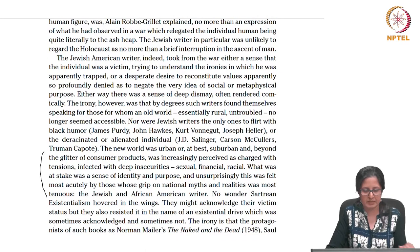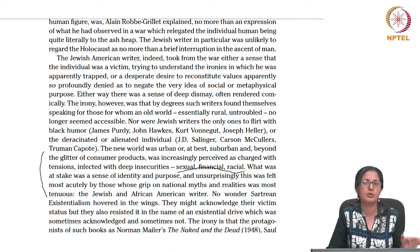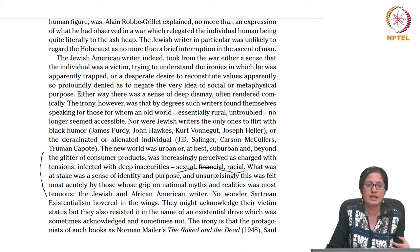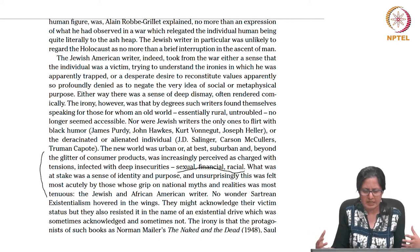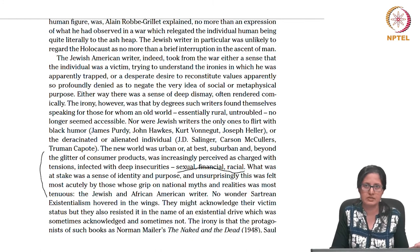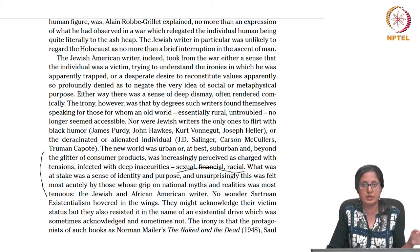The new world was urban and suburban, and beyond the glitter of consumer products was increasingly perceived as charged with tensions, infected with deep insecurities — sexual, financial, racial. We saw this in The Zoo Story and in A Raisin in the Sun. The anxieties operate at multiple levels, and by the time they begin to articulate themselves, even to the point of driving individuals and families to different tragic circumstances, we realize that it is not really within the individual's control. Things seem to have gone entirely out of individual control with an overarching system governing their decisions, sometimes even on a daily basis.